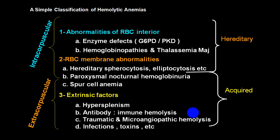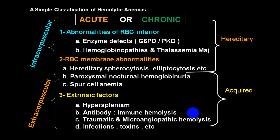The hereditary variety is also called intracorpuscular. In the acquired variety we have PNH — paroxysmal nocturnal hemoglobinuria — or spur cell anemia, and extrinsic factors including hypersplenism, immune hemolysis, traumatic or microangiopathic hemolysis, or infection and toxins. This group is called extracorpuscular. Note that PNH is an intracorpuscular abnormality while spur cell is extracorpuscular. Hemolysis can be acute or chronic.